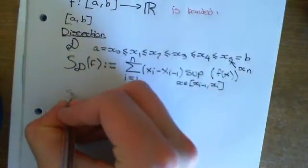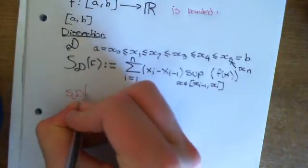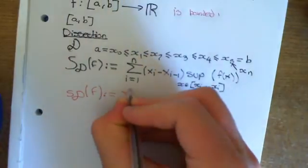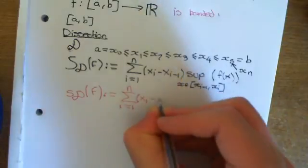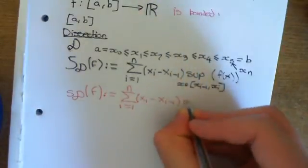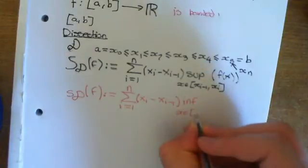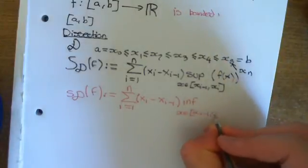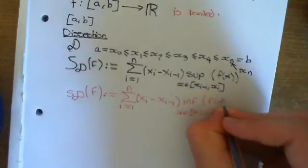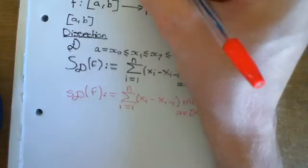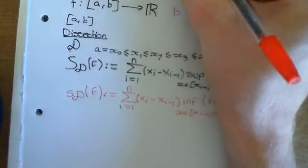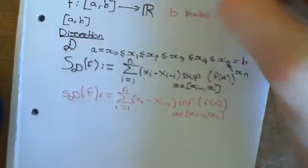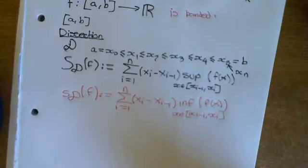You can also define the lower Riemann sum — small s of the dissection of f — which is defined to be the sum of Xᵢ minus Xᵢ₋₁ times the infimum, i.e., the greatest lower bound if the minimum isn't actually an element of the set. The intuition here is that you get something smaller than the area: you pick the minimum height for each interval and add those up, giving something smaller than the actual area. So for every dissection, you can work out these upper and lower Riemann sums.